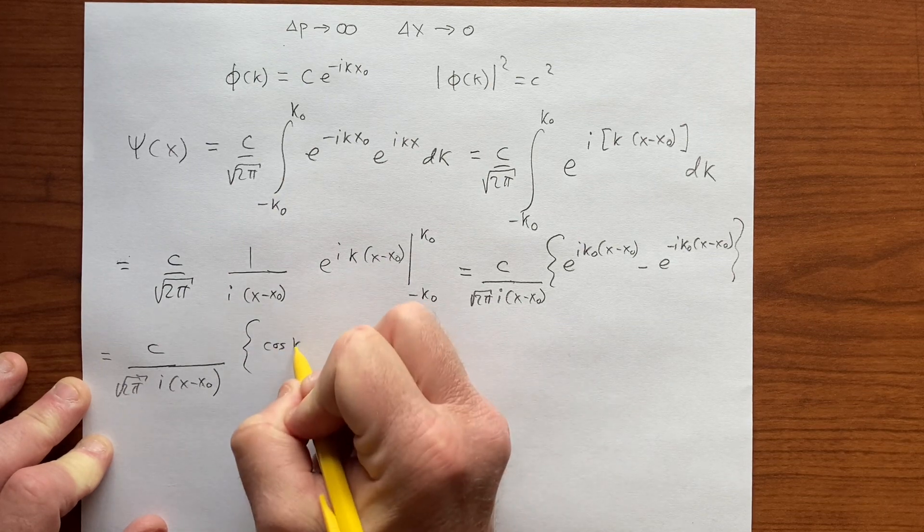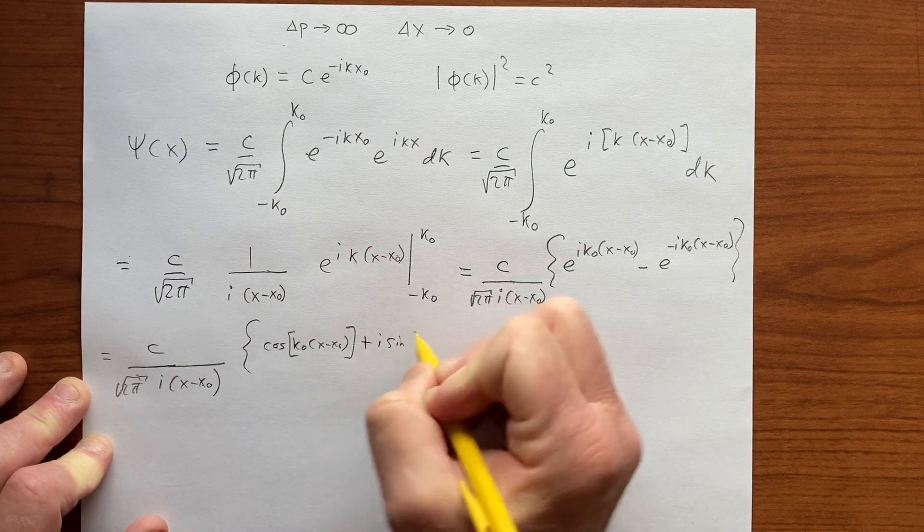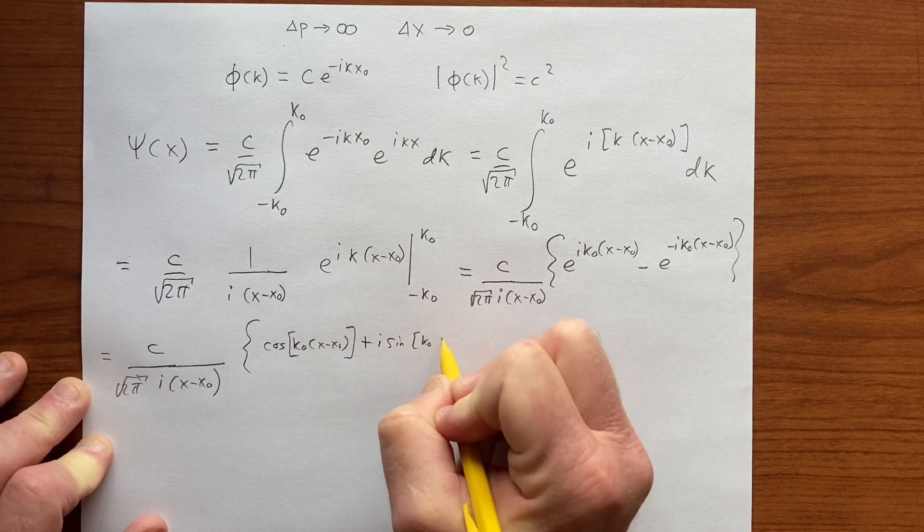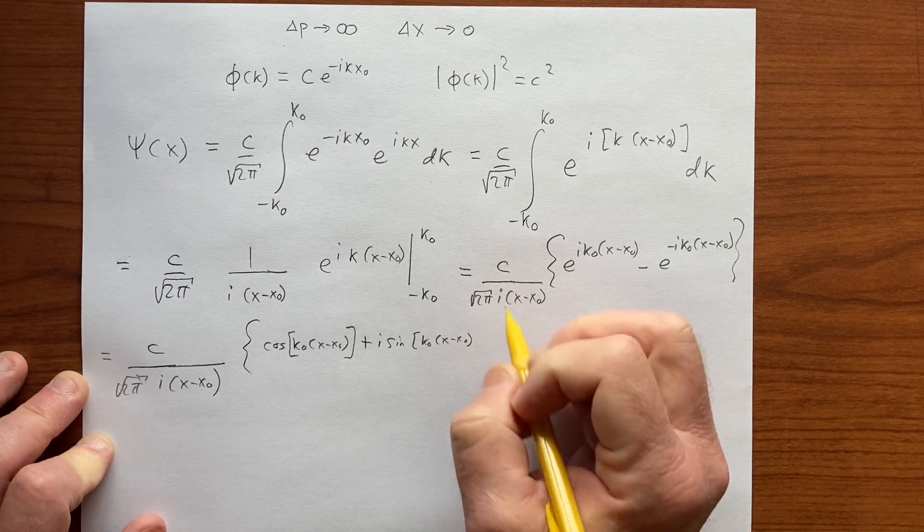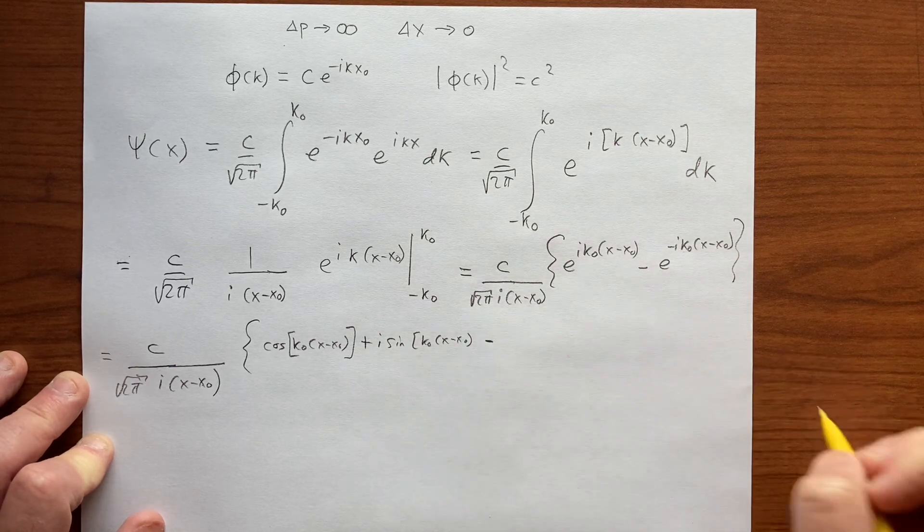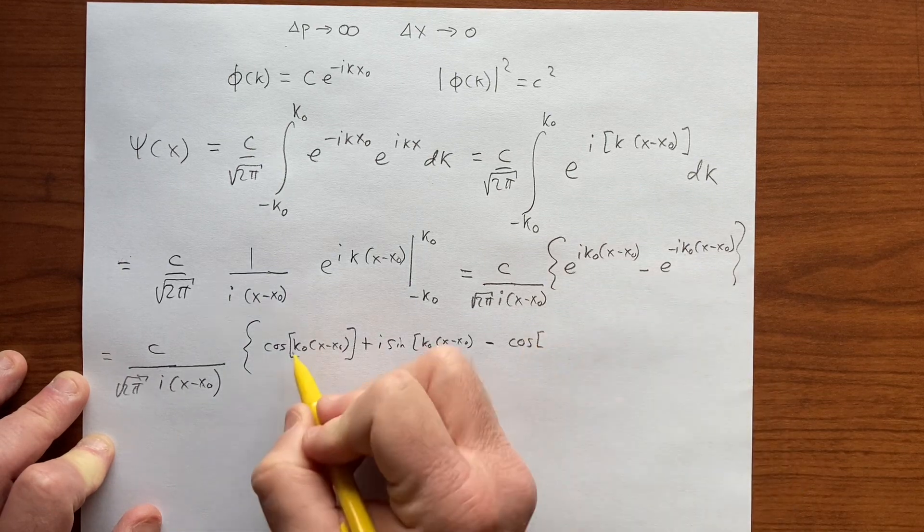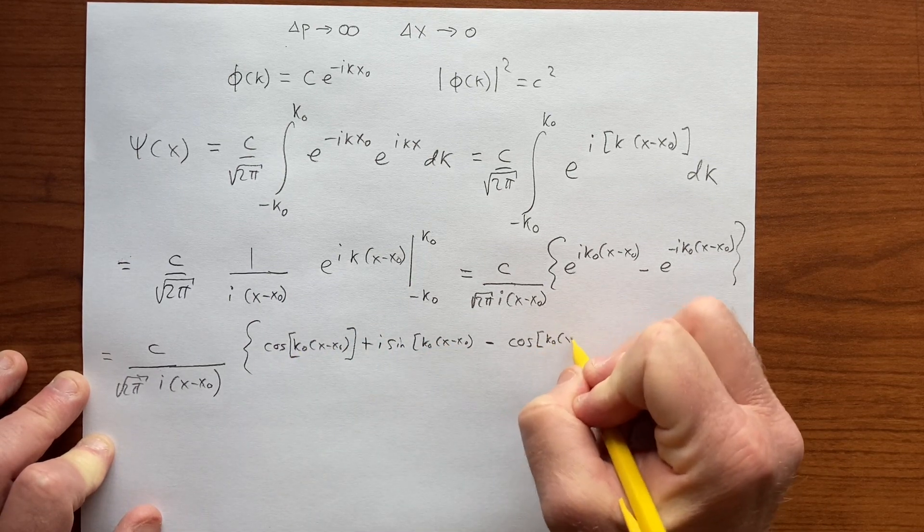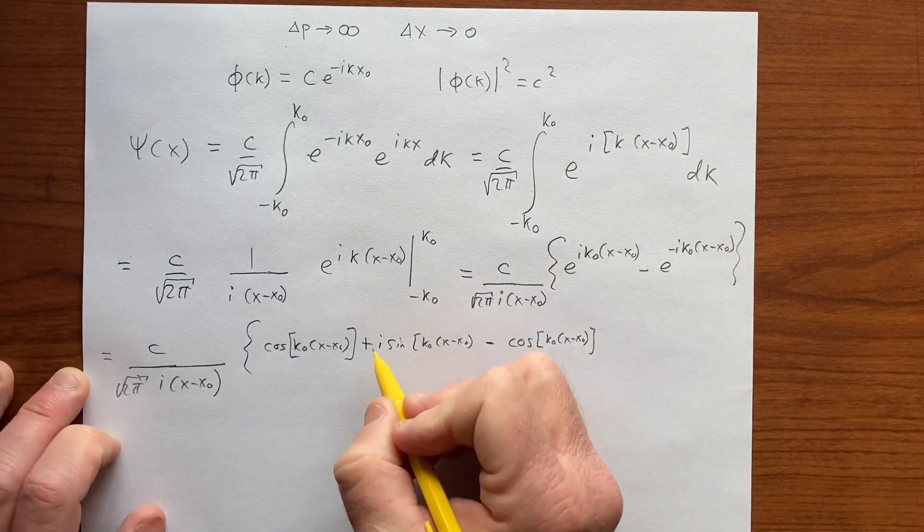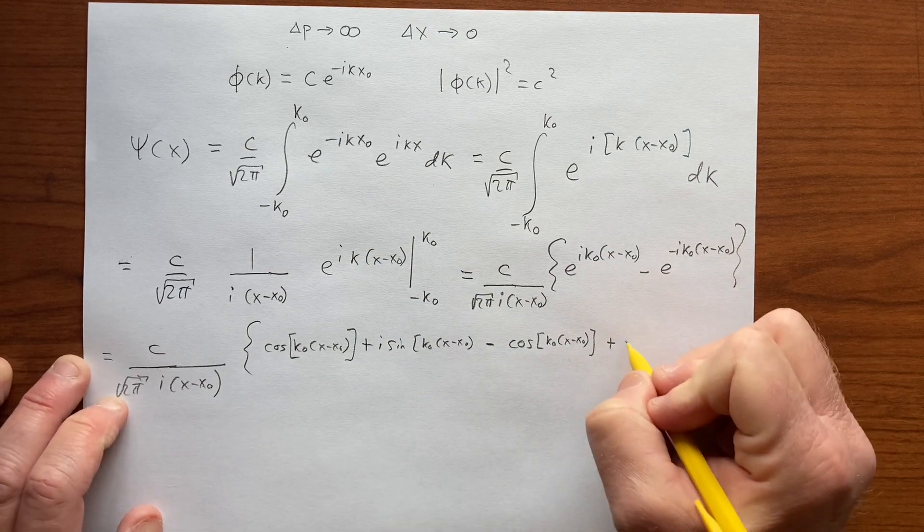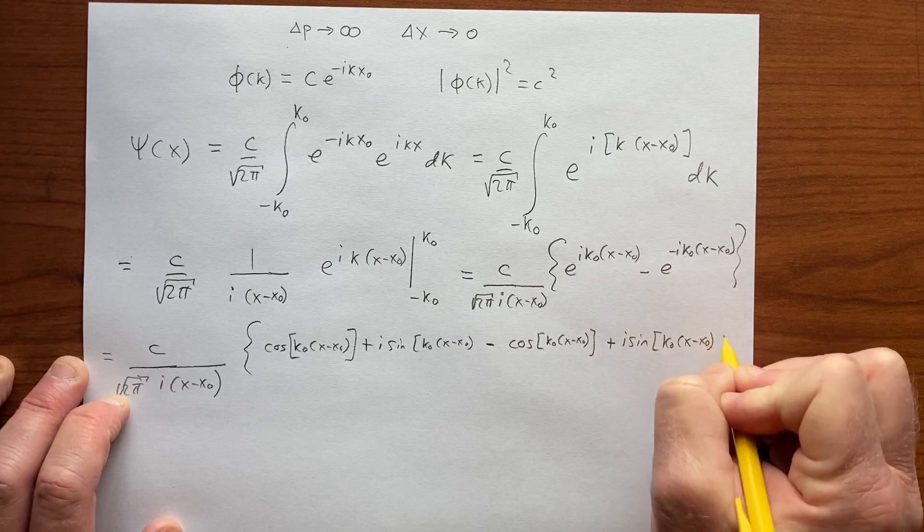Cosine of k₀(x minus x₀) plus i sine k₀(x minus x₀), and I'm doing minus this, which is cosine of k₀(x minus x₀) minus i sine k₀(x minus x₀). There's a minus sign here, so it's plus i sine of k₀(x minus x₀).